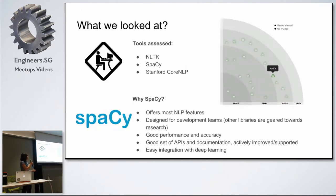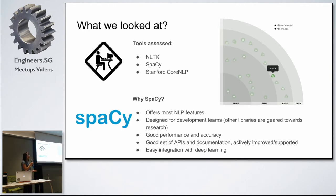We looked at a bunch of tools out there. We knew we would have to do some natural language processing, so we looked at some of the main NLP tools available. NLTK is a Python library. We looked at SpaCy, another Python library for natural language processing, and Stanford Core NLP, which is a Java one.